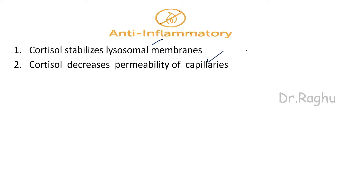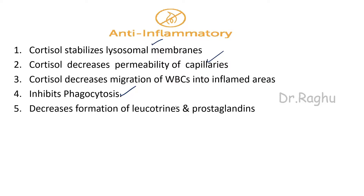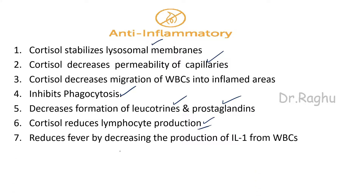Cortisol decreases the migration of WBCs into the inflamed area and inhibits phagocytosis. It decreases the formation of chemical mediators of inflammation like leukotrienes and prostaglandins. It reduces lymphocyte production, causing lymphocytopenia. It may also reduce fever by decreasing the production of interleukin-1, a cytokine produced from WBCs. All these actions contribute to the anti-inflammatory action of cortisol.